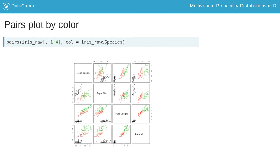It is often useful to color plots by specific variables. For the iris dataset, we can color the scatter plots by species. In the pairs command, we provide extra argument col equals iris_raw dollar sign species to color the points by species.